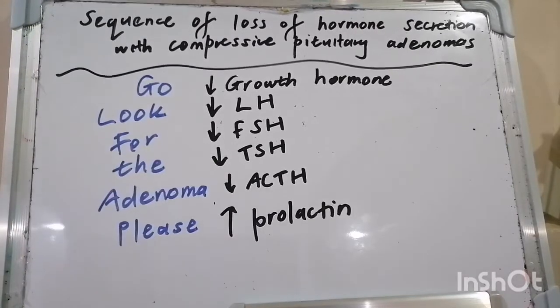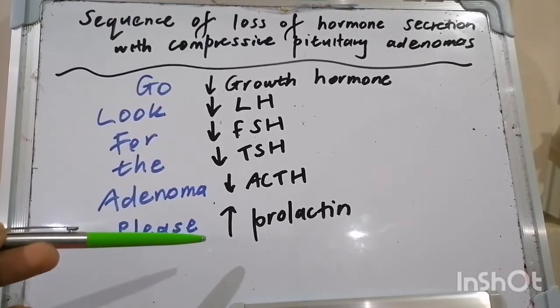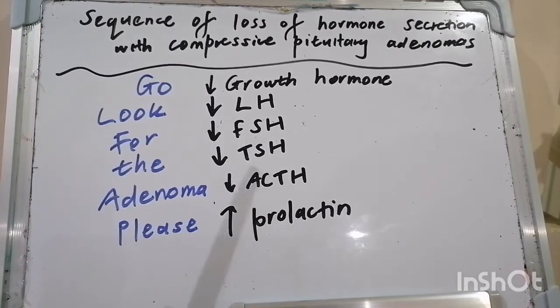P in the mnemonic — Prolactin — goes the other way. Usually there is loss of tonic inhibition of prolactin secretion, resulting in increased prolactin levels.